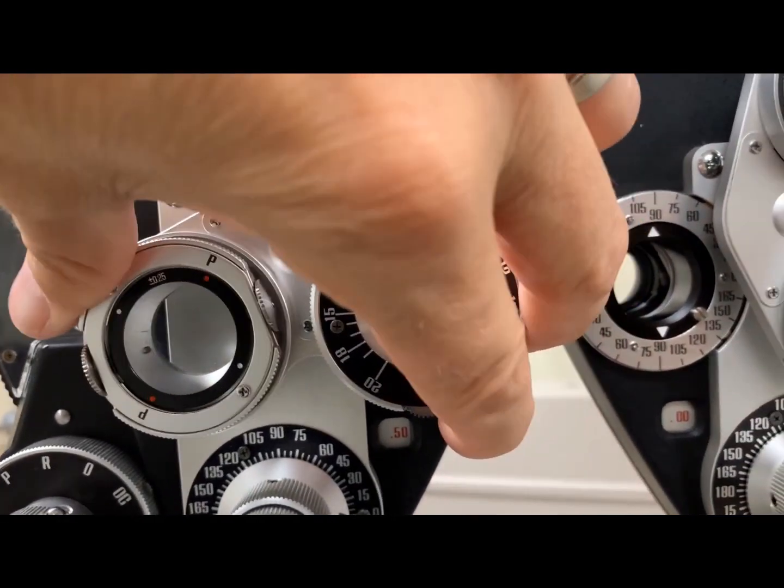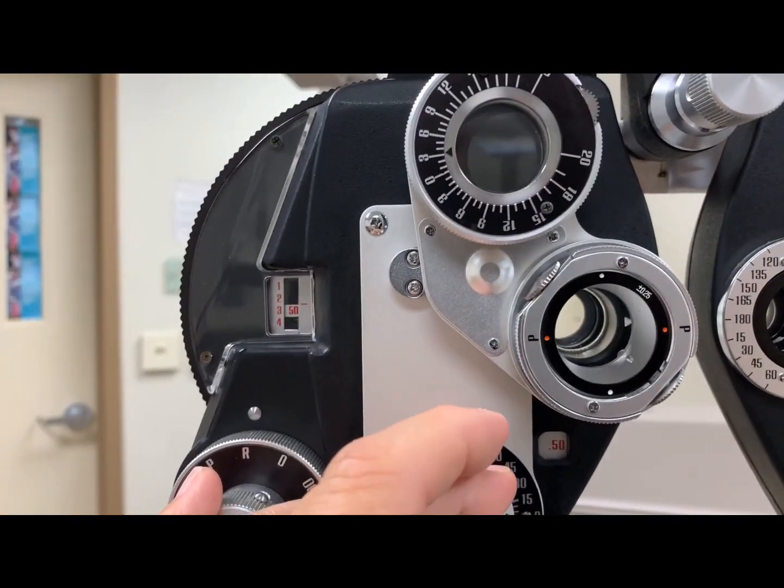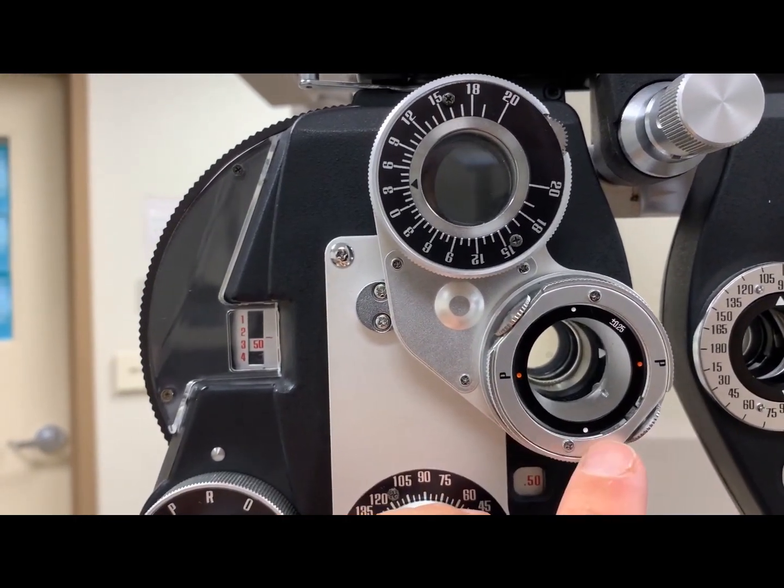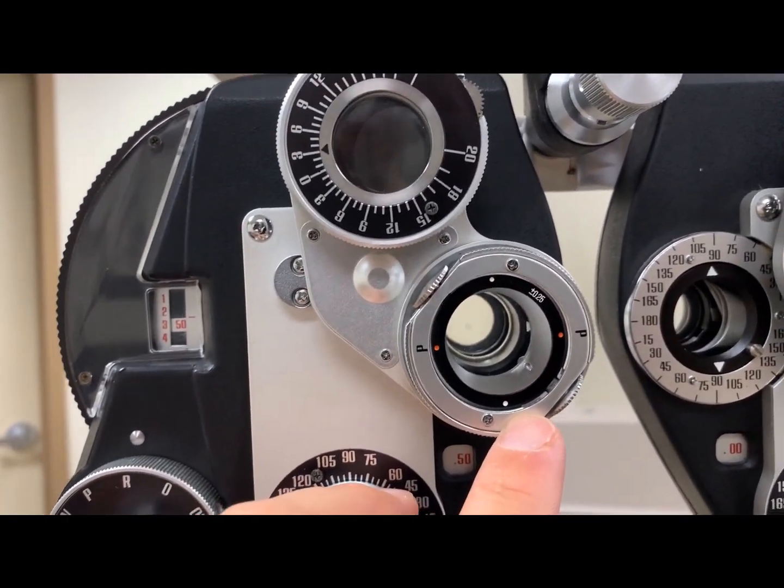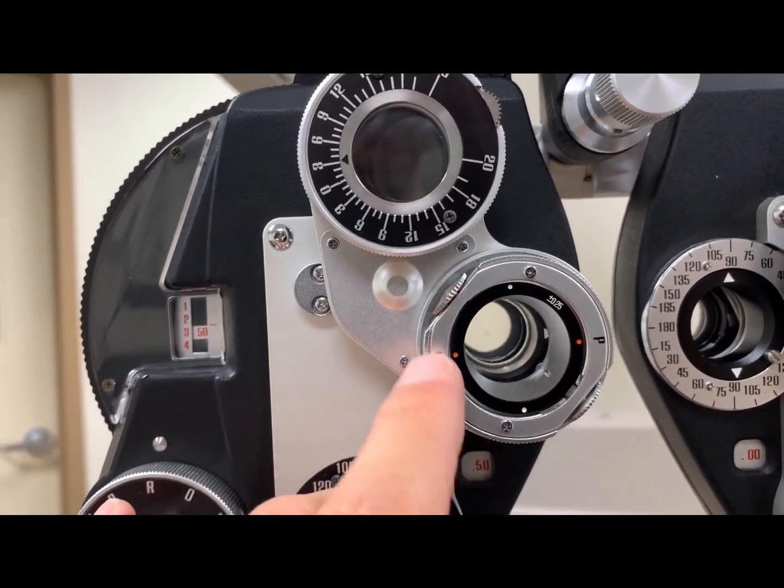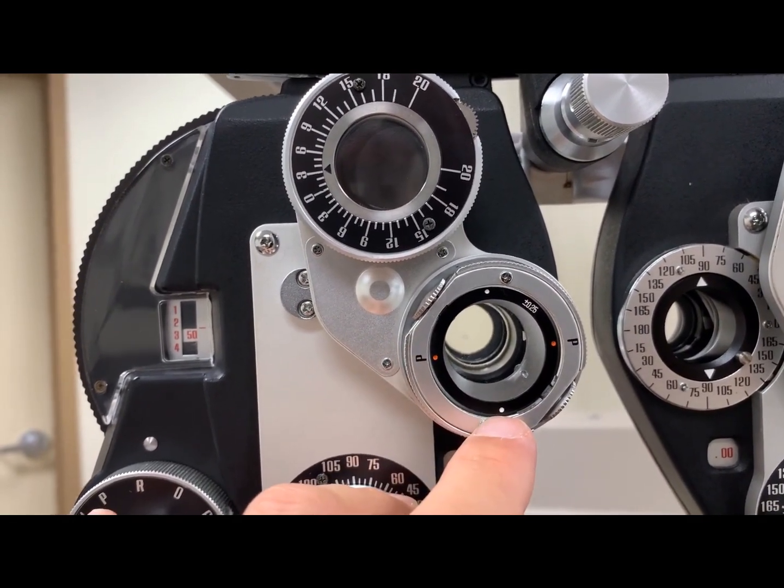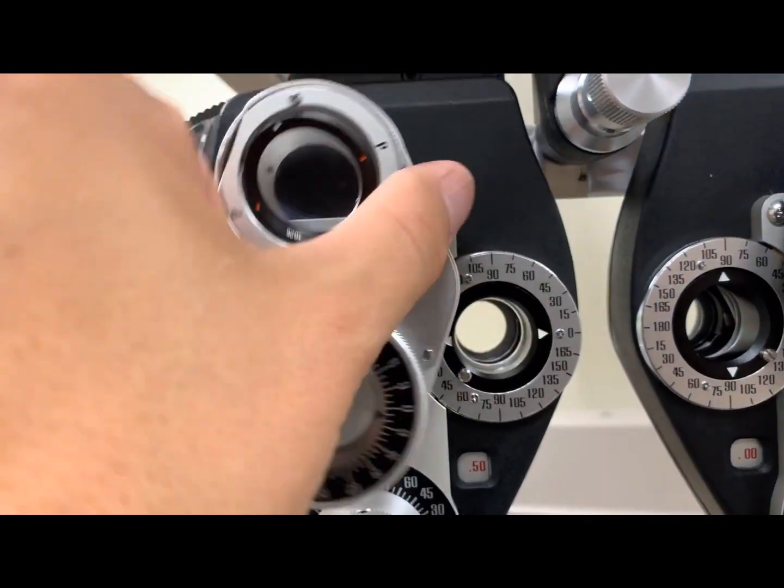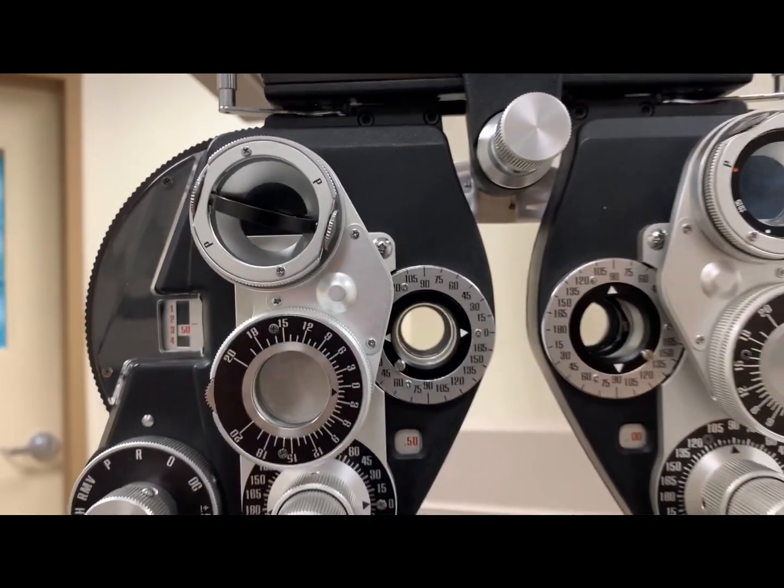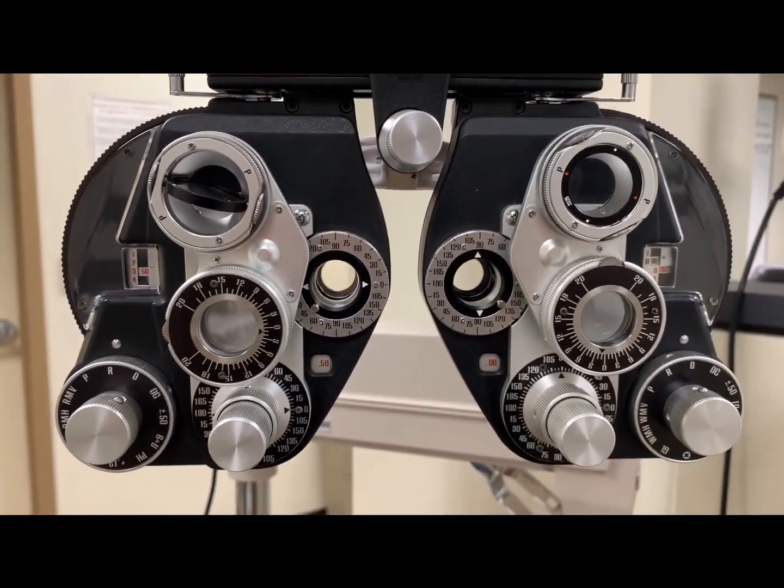The JCC lens is going to be this set of lenses, and we'll learn more about this as the term goes on. But the JCC lens is going to have the P with the red and the white indicators. And that concludes the introduction to the phoropter.